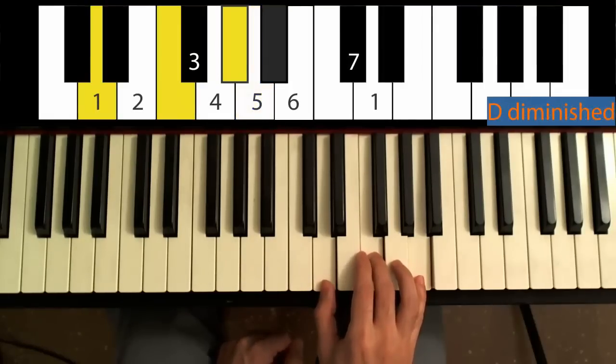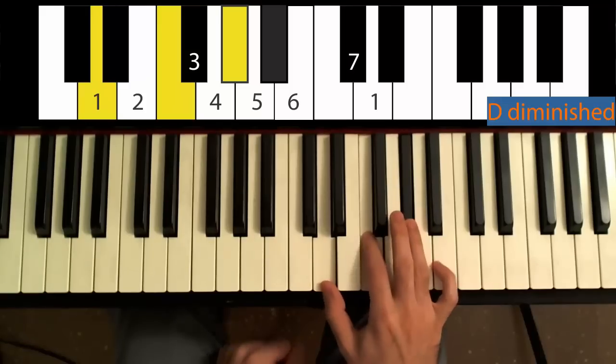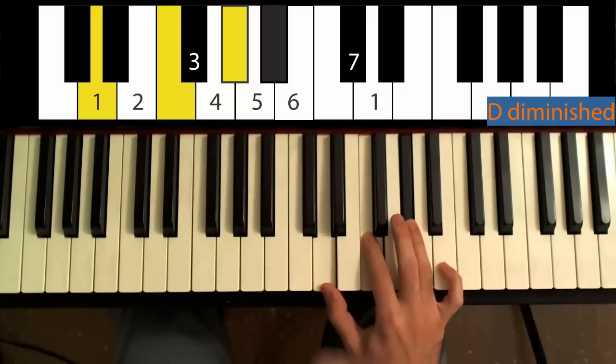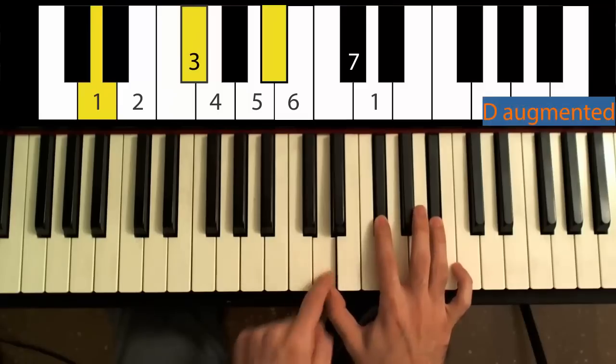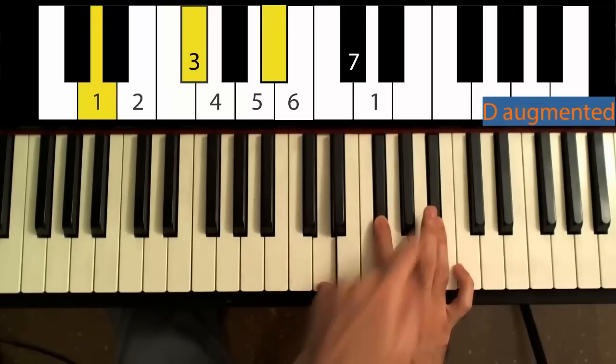The D diminished would be 1, lower 3rd, lower 5th. And the D augmented would be 1, 3, raised 5th.